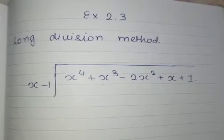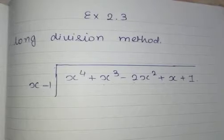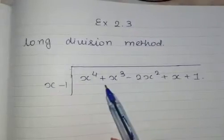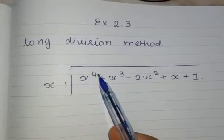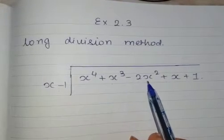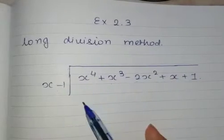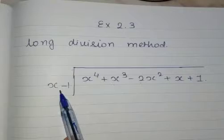Otherwise, the method of division is same. So let's have a look at this. You are having a polynomial X raised to 4 plus X raised to 3 minus 2X square plus X plus 1, and we have to divide this with X minus 1.